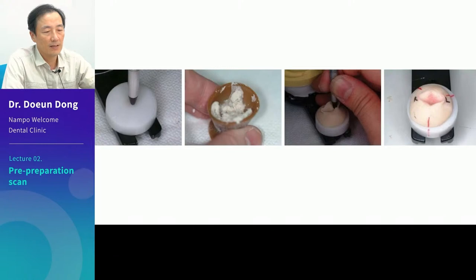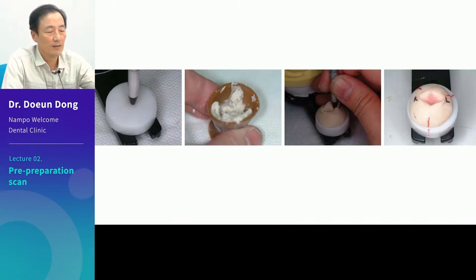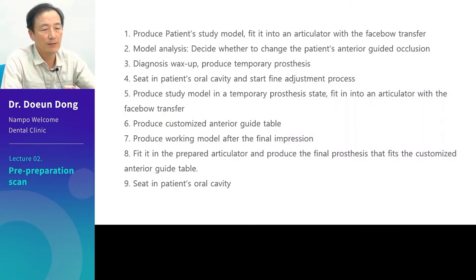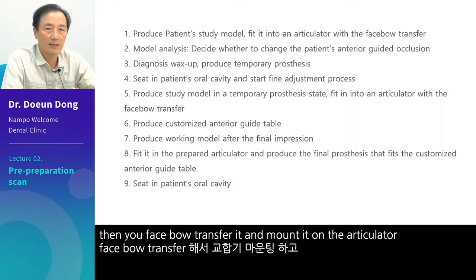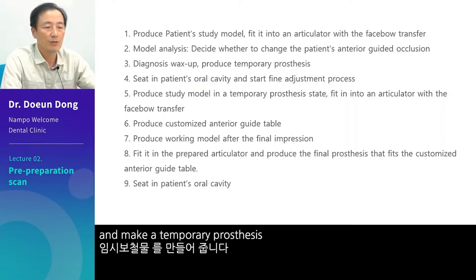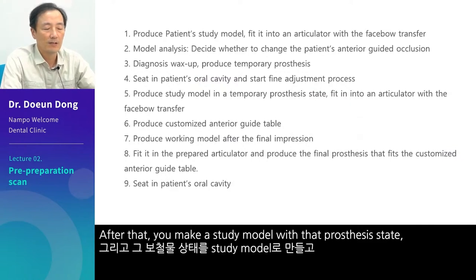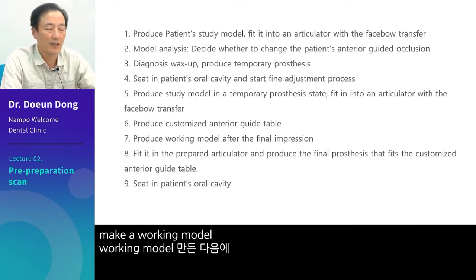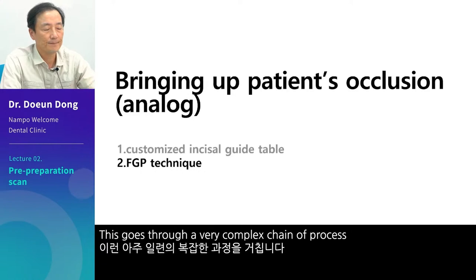We use a method using resin that suits each patient, not a straight-line guidance. Then, like the picture on the right, an individualized customized incisal guide table can be made. If you take a look at the process: first you make a study model, then face-bow transfer it and mount it on the articulator, and decide whether to use the patient's anterior guidance. After that, you do diagnostic wax-up and make a temporary prosthesis. Then you seat the temporary prosthesis in the patient's oral cavity and fine-tune it. After that, you make a study model with that prosthesis state, face-bow transfer again, make a customized guide table, take a final impression, make a working model, seat the customized guide table, make the prosthesis, and then seat it in the oral cavity. This goes through a very complex chain of processes.